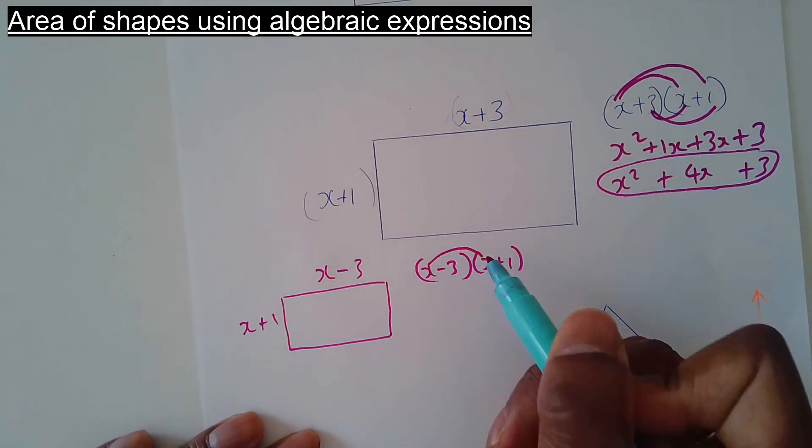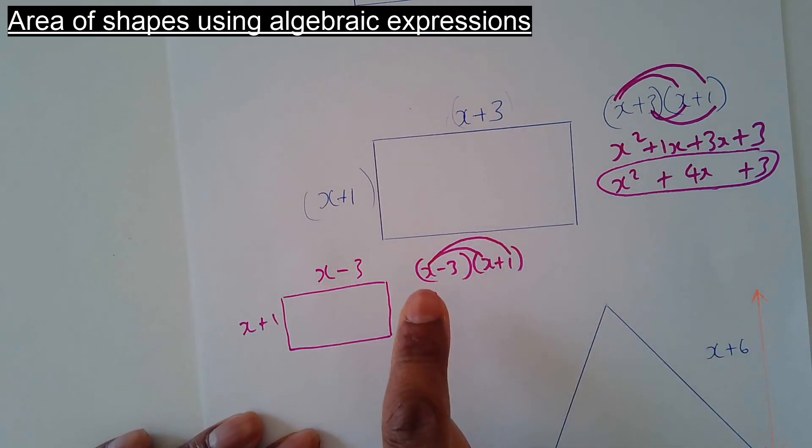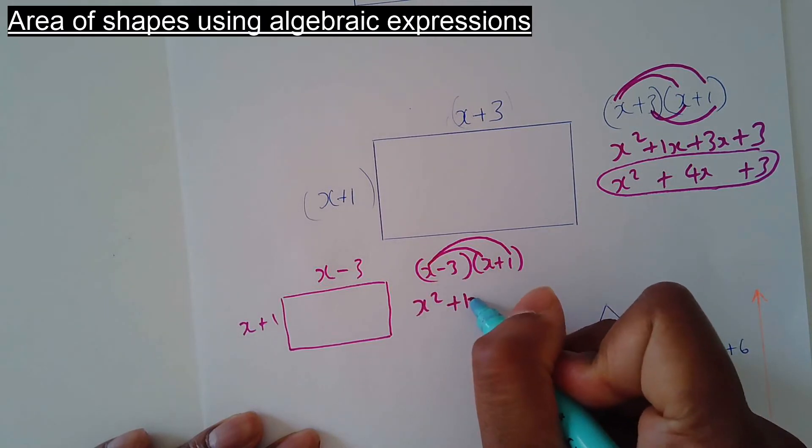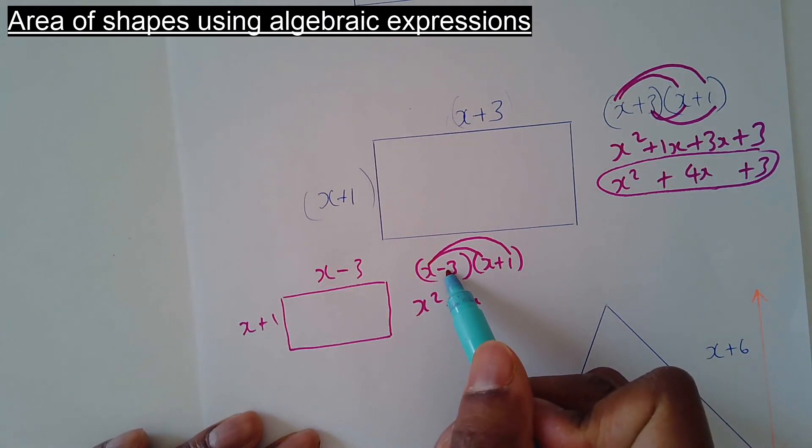x times x is x squared, x times... That's x times positive 1. x times 1 is 1x. Now you've got to be careful about the sign. If it's a negative in front of the number or the letter, it matters.